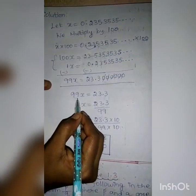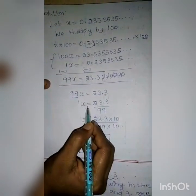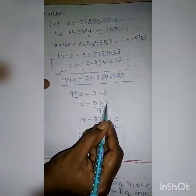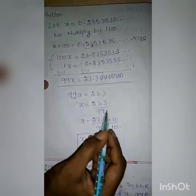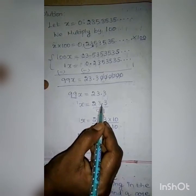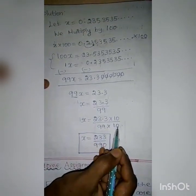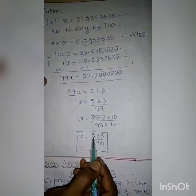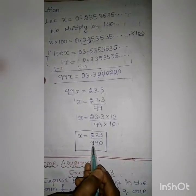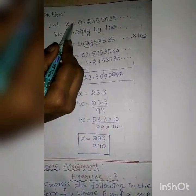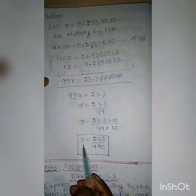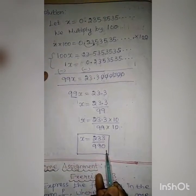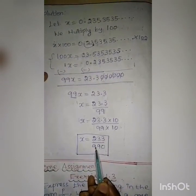So X is equal to 23.3 by 99. Here, 23.3 is a decimal form, so we have to convert it to a whole number. Multiply the numerator and denominator by 10, because there is one decimal place. So 23.3 into 10 gives 233, and 99 into 10 gives 990. Therefore X is equal to 233 by 990. There is no common factor, so we write X equal to 233 by 990.